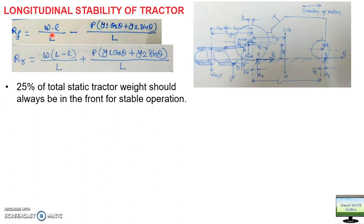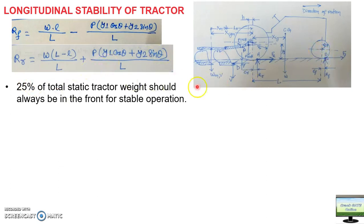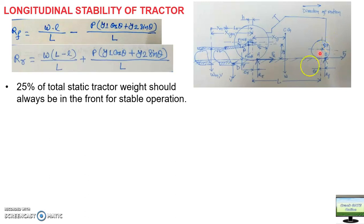Rf is the component of total tractor weight coming on the front, and it should always be at least 25%. If it falls below 20% of the gross weight of the tractor, the front wheel will start lifting immediately — that overturn can happen within a fraction of a second. So for safety we use 25% as the threshold.